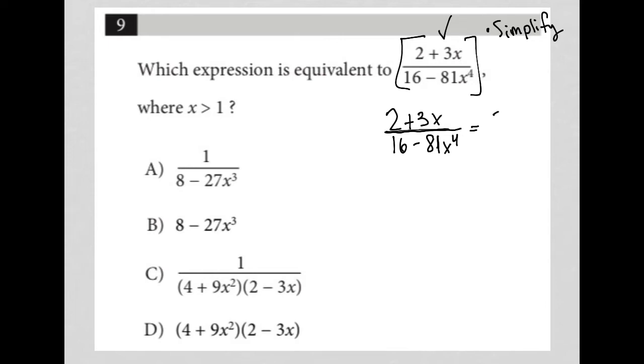So the numerator 2 plus 3x cannot be simplified. It cannot be reduced. There's no GCF. There's nothing I can do with 2 plus 3x. Now, 16 minus 81x to the 4th, however, there's a lot that I can do with this. Starting off with, this is the difference.